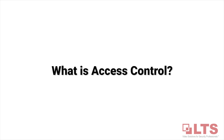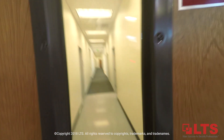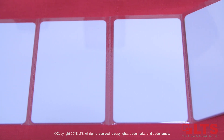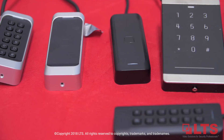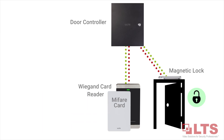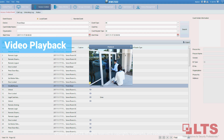What is access control? The purpose of access control is to perform authorization, identification, authentication, access approval, and accountability of individuals through login credentials using key cards, key fobs, keypads, and biometric scans to certain areas within a predetermined time frame or set schedule while keeping others out.